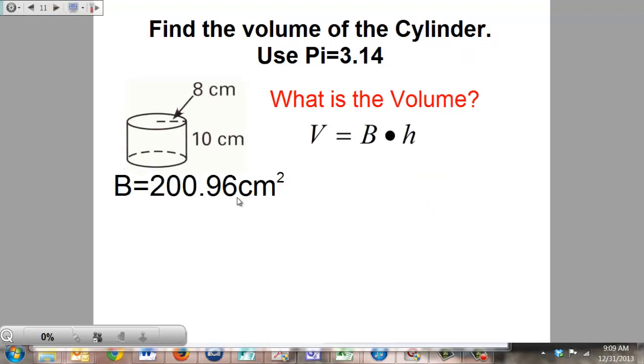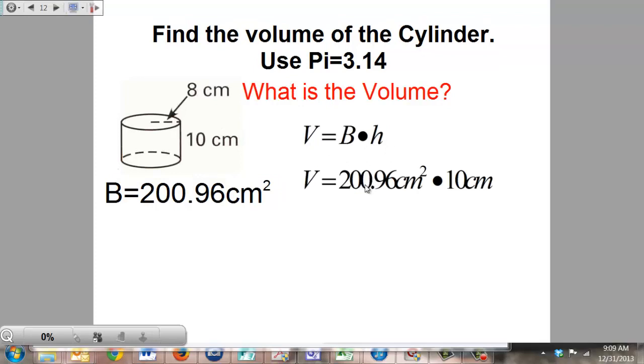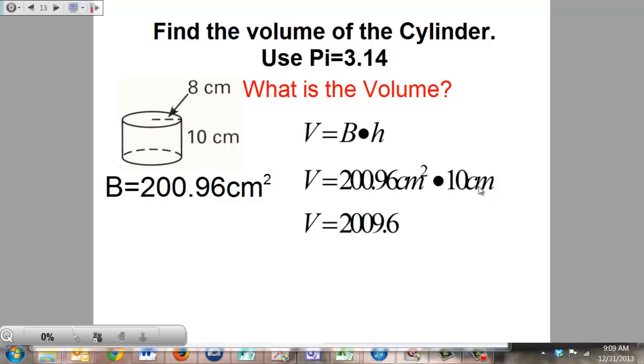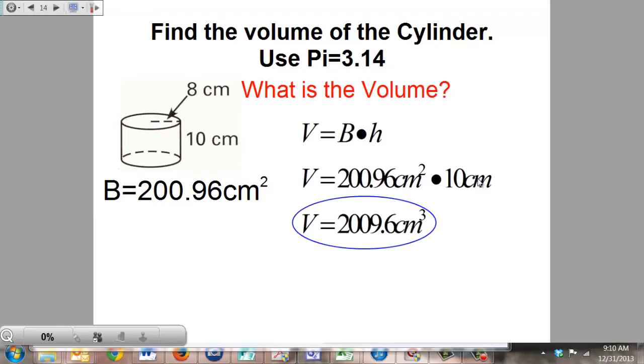Now we're going to take that value and plug it into the volume formula. So we're going to say the base area is 200.96 centimeters squared times the height of the cylinder, which is 10 centimeters. Multiply that out. You get 2,009.6 centimeters cubed. Circle your answer. That is really all there is to these things. They're very easy.